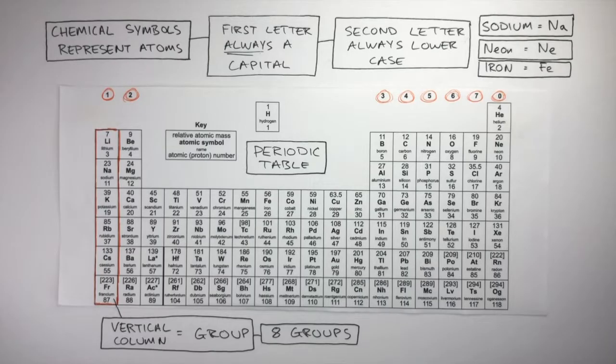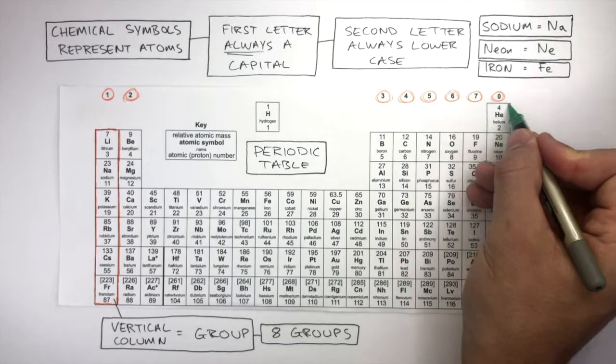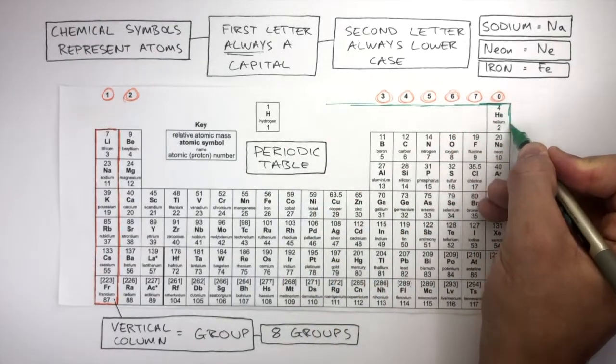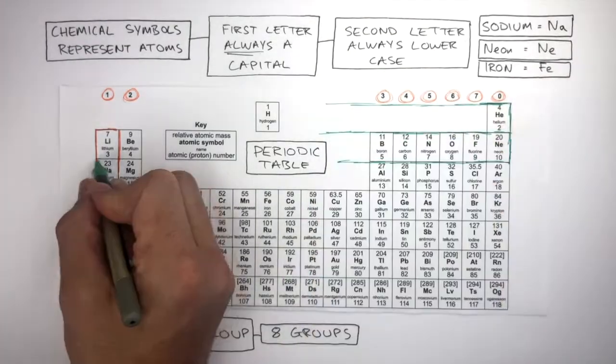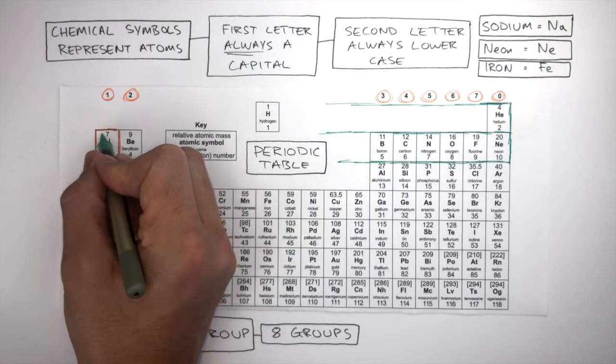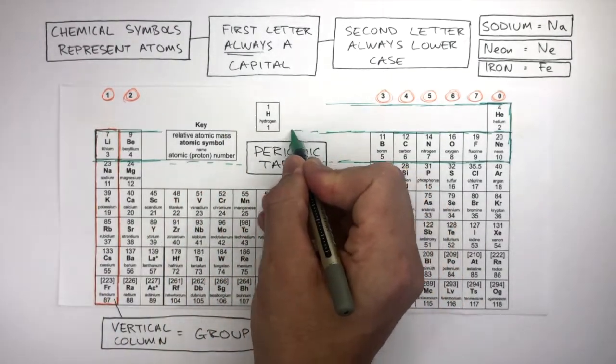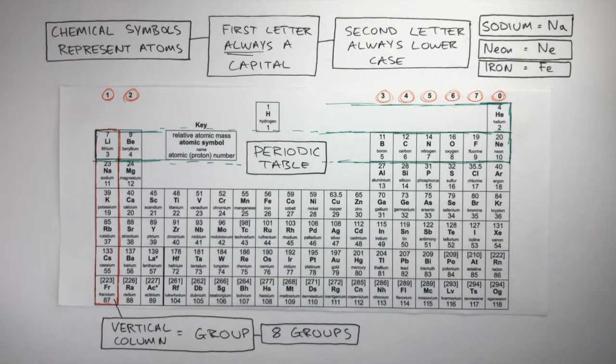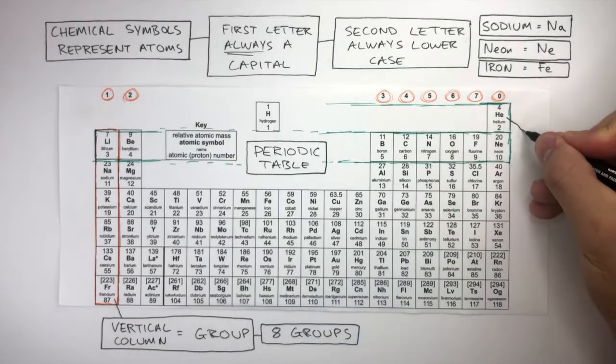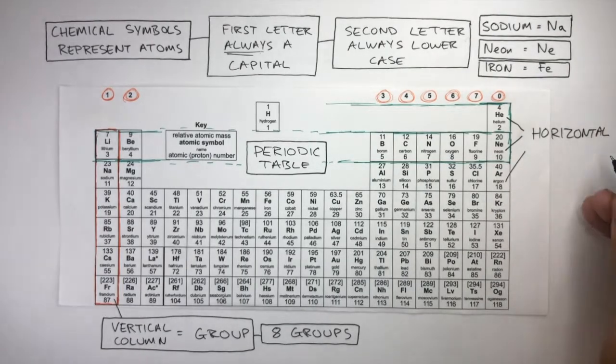And then there's something called a Period. A Period is a Horizontal Row. Helium is in the first Period as shown here. The second Period is just below and it starts at Lithium going right across to Neon. And then below this is the next Period and below that is the next Period and it keeps on going until you get to the bottom of the Periodic Table. So a Period is a Horizontal Row.